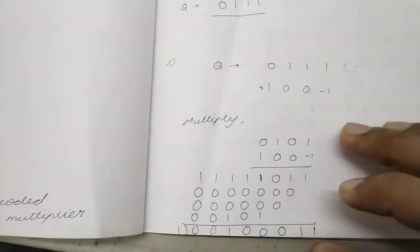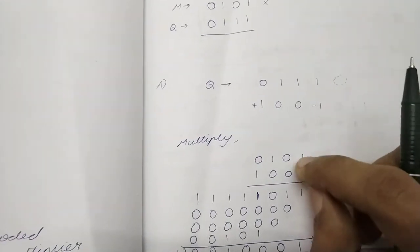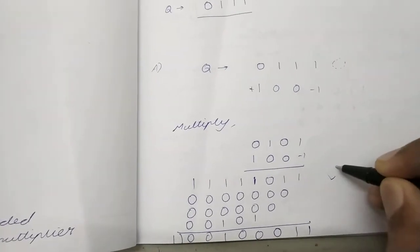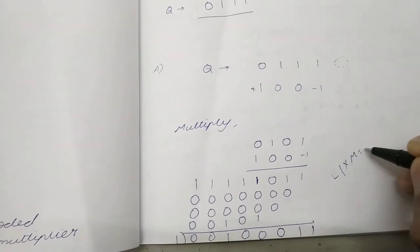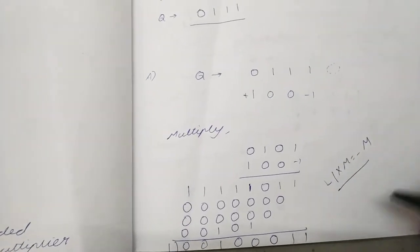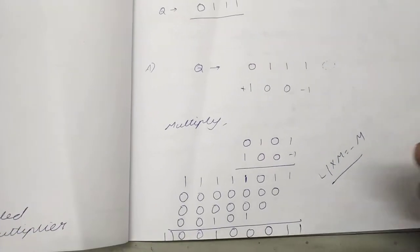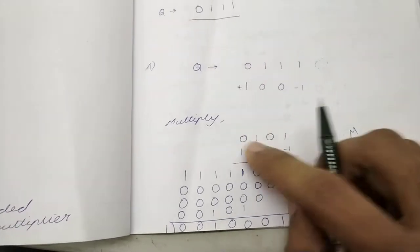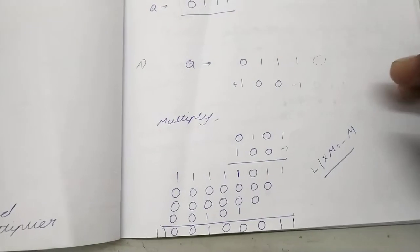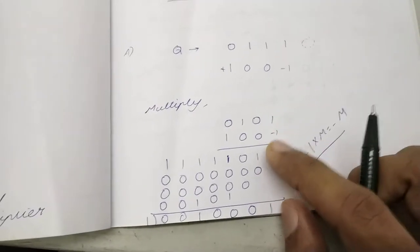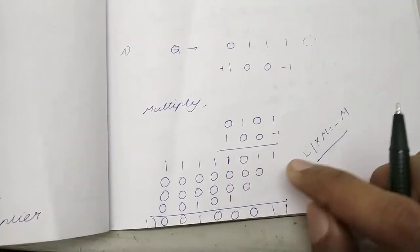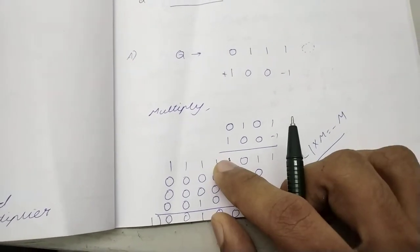What happens is minus 1 into this number, minus 1 into m is minus m. So this minus m, you know how to convert a number into its two's complement negative. That is what we have done here: 1, 0, 1, 1.